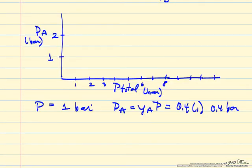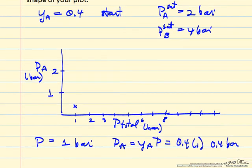At a total pressure of 1 bar we start here on the plot. As we increase the total pressure, we increase the partial pressure of A — just ideal gas behavior. The partial pressure of A equals the mole fraction of A, which stays at 0.4 as long as we have only vapor phase, times the total pressure. The first change occurs when one of the components reaches its saturation pressure.